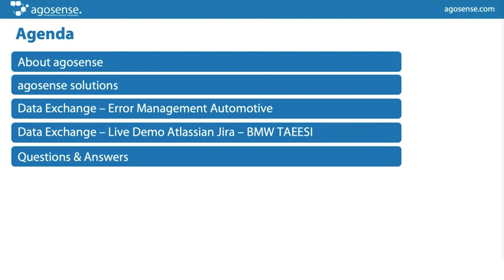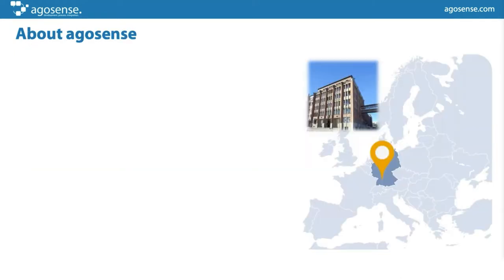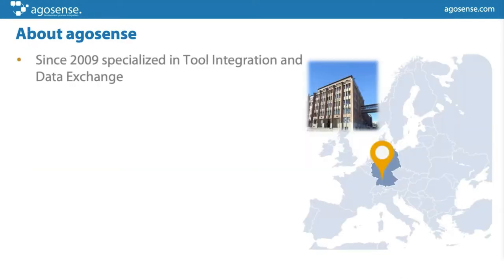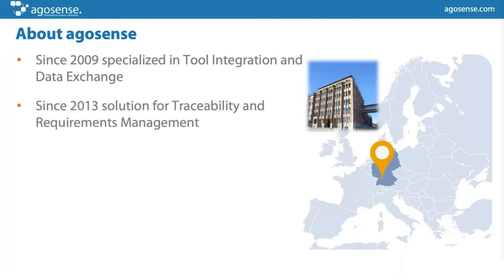A few words about Argosense: we founded the company in 2009 with the idea of specializing in tool integration and data exchange, because we found that many ALM systems on the market are not well integrated with each other. Especially when it comes to exchanging data between different companies, there are no real standards, and we try to provide our customers a very good option to make that at least internally a kind of standard.